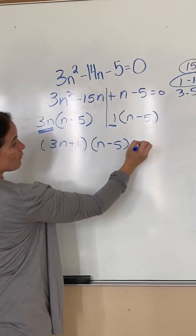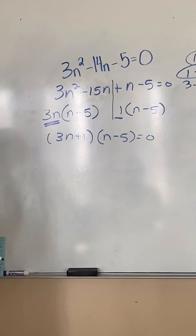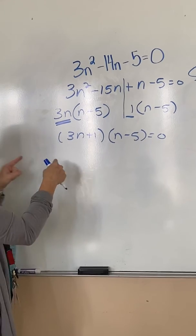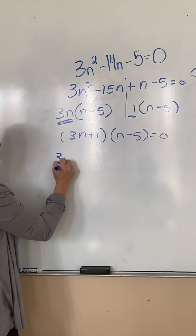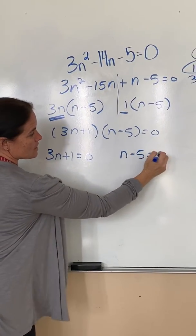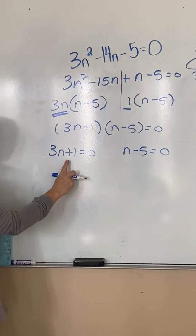So right now I have factored, but the instructions should have said solve by factoring, which means I have to actually say what the answers are. Where does it go through the x? So I'm going to set that parentheses equal to zero, just like we did in the last problem, set that one equal to zero, and now I'm going to solve it.